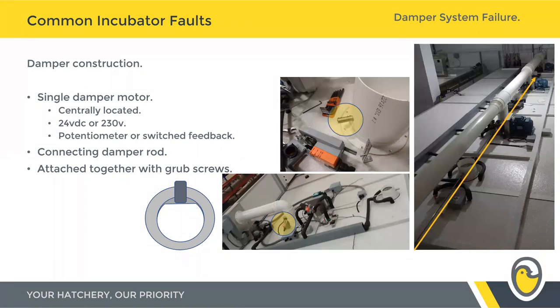If at some point that grub screw comes loose, your damper motor will activate and turn, but it won't continue that motion all the way down the machine. What you can find is that three of your dampers work absolutely fine and then three of them may not.